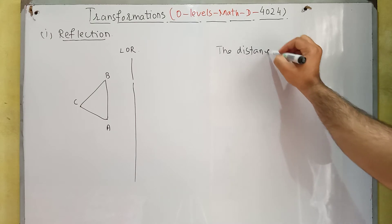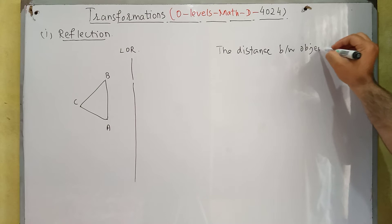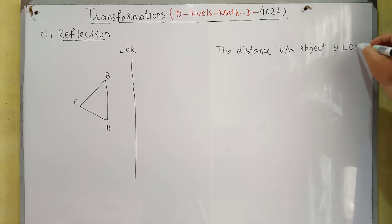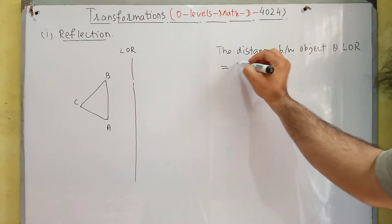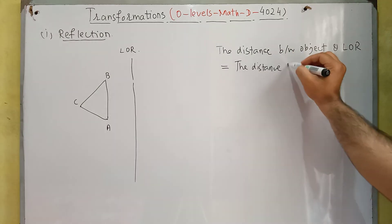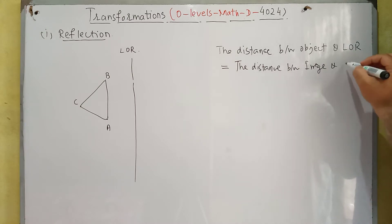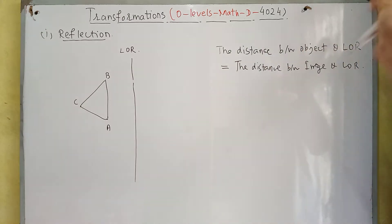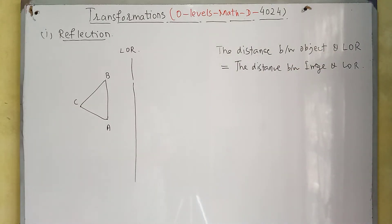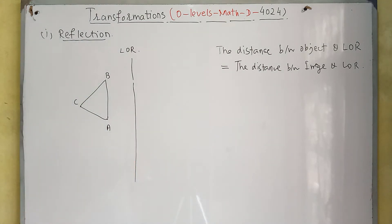For reflection, the working rule is: the distance between the object and the line of reflection is equal to the distance between the image and the line of reflection. This is the working rule for reflection.